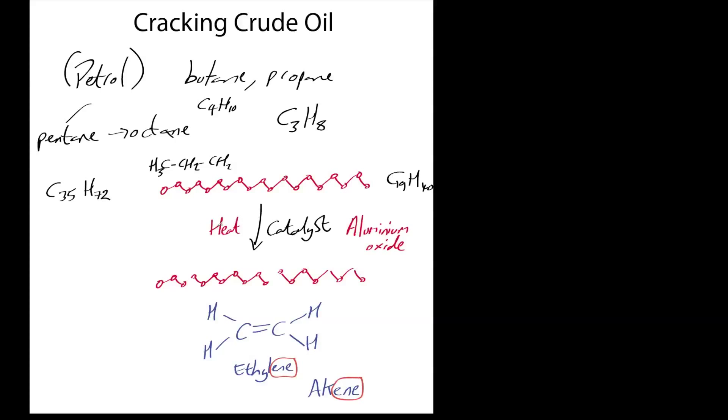We heat it and it goes over a catalyst, usually aluminium oxide—there might be other catalysts available now. It's broken down into smaller molecules, and these smaller molecules are more useful to us, for example for powering our cars or cooking with, or something like that.